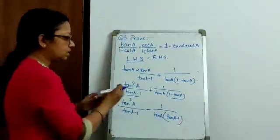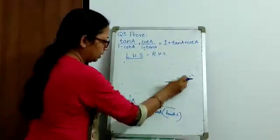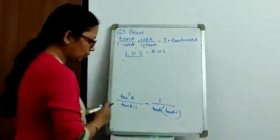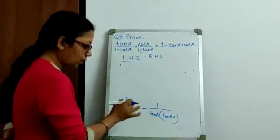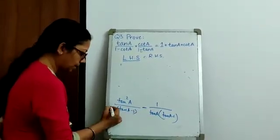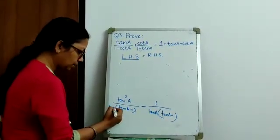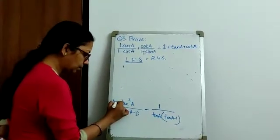So, now as we can see, our denominators are almost similar. We go for a subtraction by LCM method. Or, the other option is, we can multiply in my first term with tan A in the denominator and in the numerator.